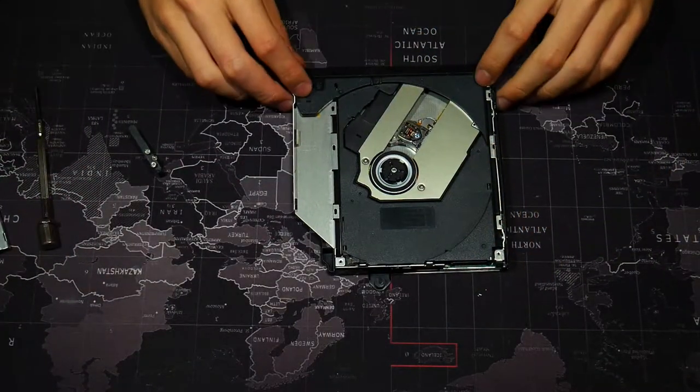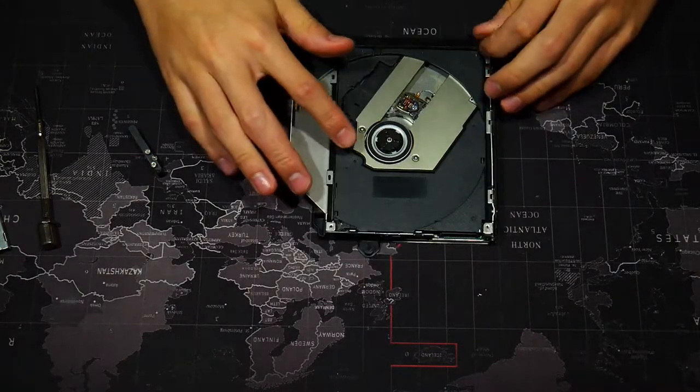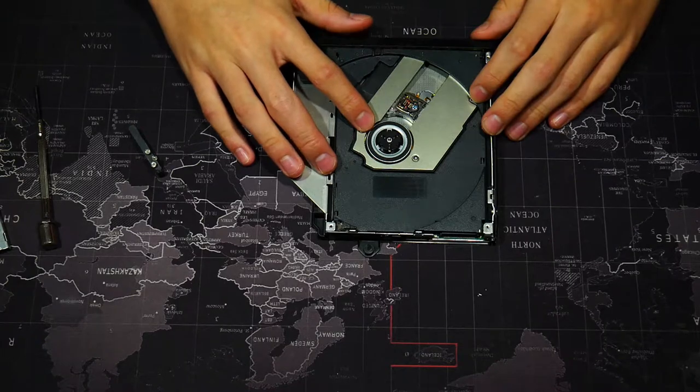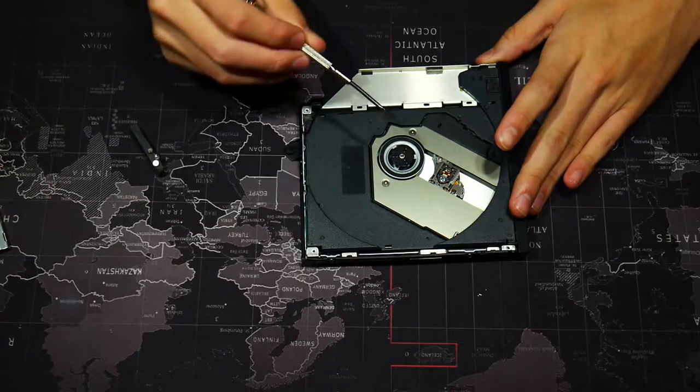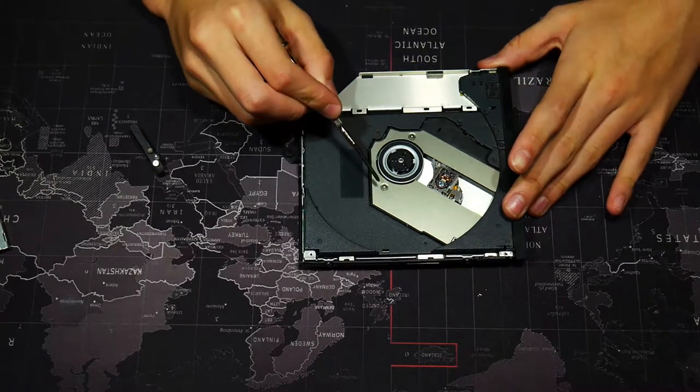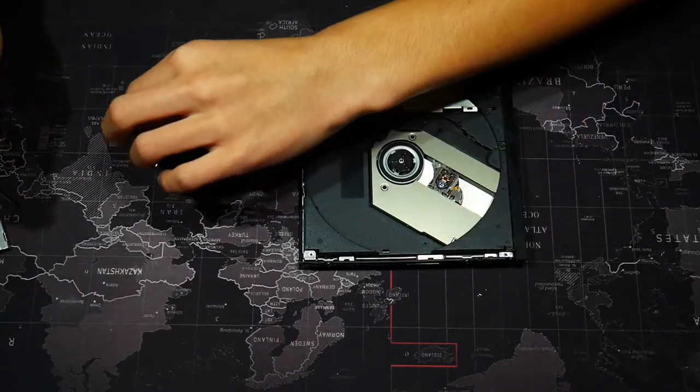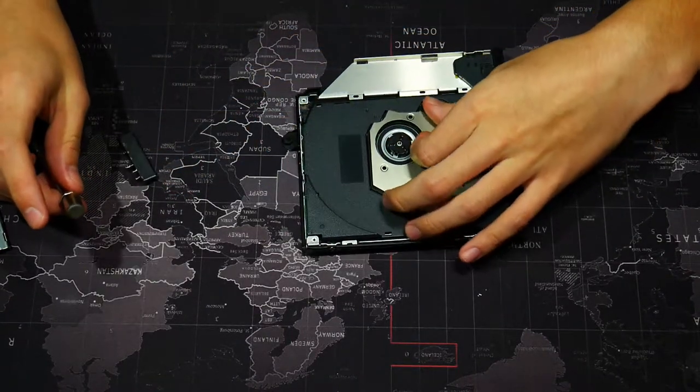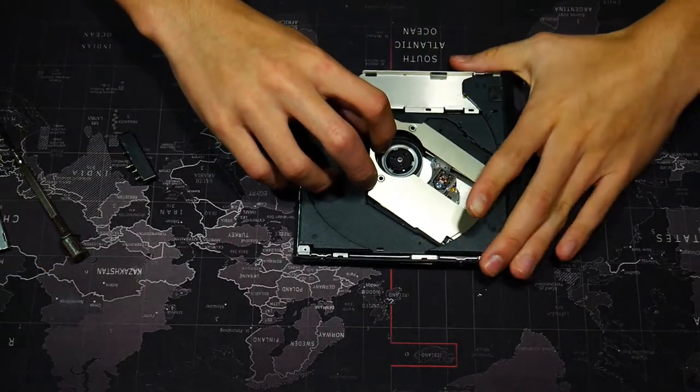After that, you can see right here that this is the main part where you put the CD in. Now I'm going to try and figure out how to get this off. I see two screws here, I'm going to unscrew those. Once I unscrew those, this big metal piece should come off.